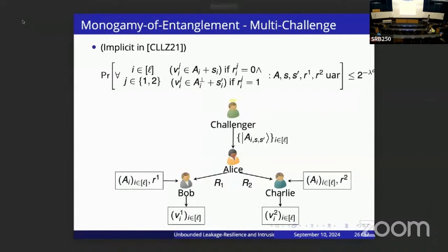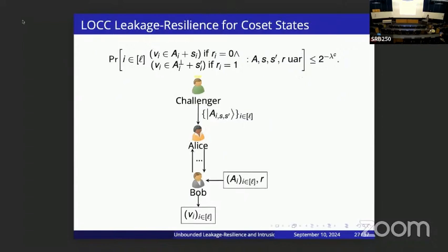Coset states have been really useful in designing copy protection schemes, but they're not directly helpful in designing leakage resilience schemes because there's no notion of leakage here — it's very close to the copy protection experiment where you're trying to split a quantum state. So we show a new property for coset states called LOCC leakage resilience for coset states.